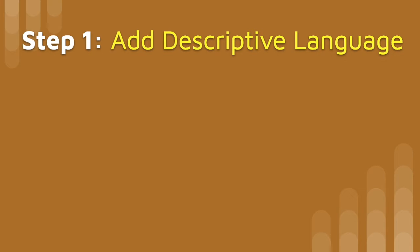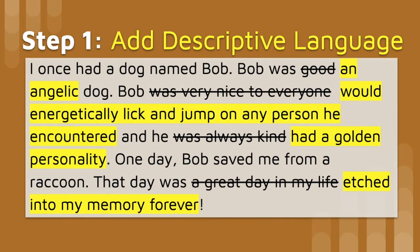You could do these steps in any order, but for me I start by adding descriptive language — adding adjectives, things that make it a little bit more interesting. I crossed out some banned words. The first one is 'good' — good is so general. I switched it to 'angelic': Bob was an angelic dog, like an angel.